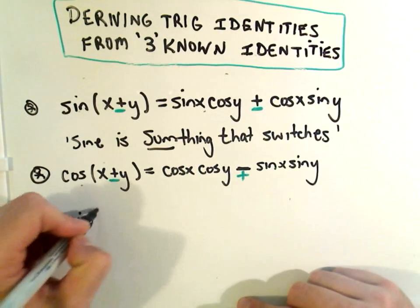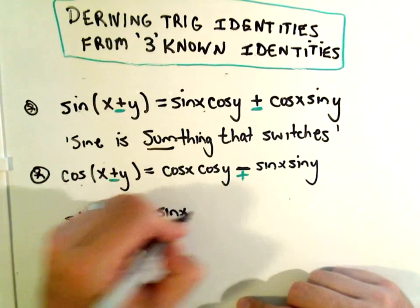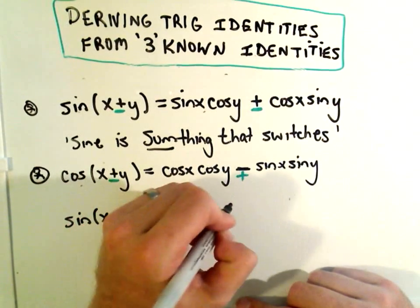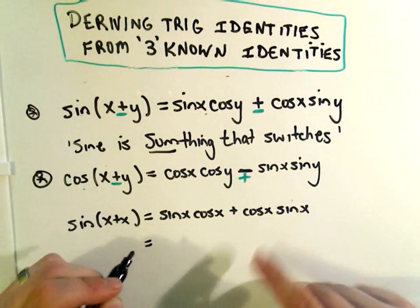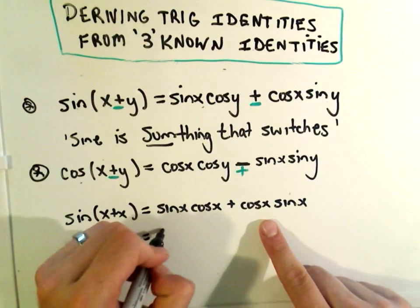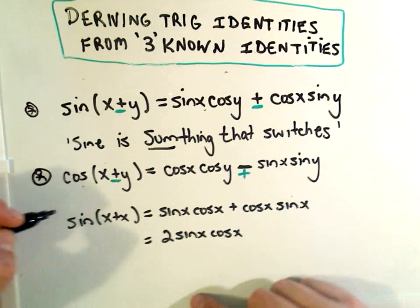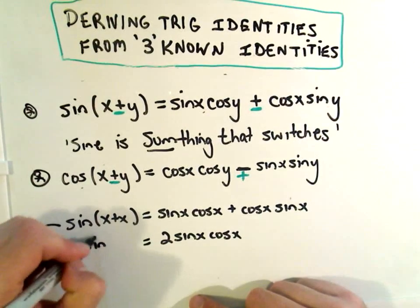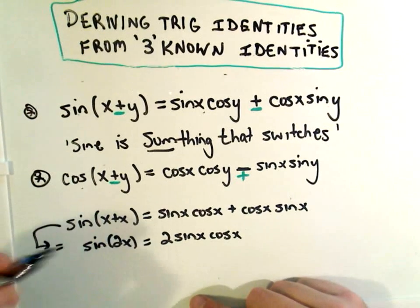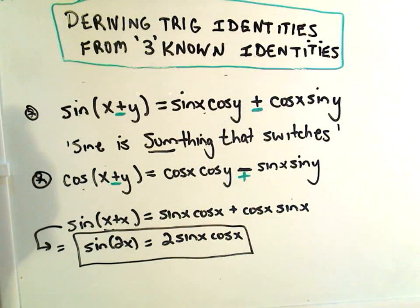It says sine of x plus x—well, that's sine of x cosine of x plus cosine of x sine of x. But the order doesn't matter, so really this is the identity 2 sine x cosine x. And if you think about sine of x plus x, what is that? Well, that's sine of 2x. So it says sine of 2x will equal 2 sine of x cosine x. So that's another trig identity.